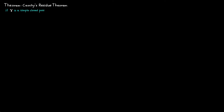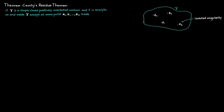Cauchy's residue theorem states that if gamma is a simple closed positively oriented contour, and if we have a function f which is analytic on and inside this contour gamma except at some points which we denote as c0, c1, and so on, which lie inside of gamma, then we know that this integral is going to be equal to 2πi times the sum of all the residues of this function. This notation denotes the residue of the function f at the point cj.